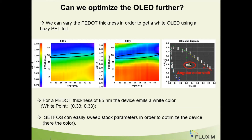Now that we have a good model in agreement with experimental results, we can use it to optimize the device. Here, we wanted to optimize the thickness of the P-dot layer in the device with a 59% AZ-PAT foil in order to obtain a color as close as possible to white. We ran a simulation of the CIEX and CIEY quantities varying the thickness of the P-dot layer, and found that the optimum thickness was 85 nm to get an OLED emitting a color close to white.